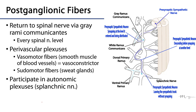Postganglionic fibers, once at a ganglion, can do one of two things: they can leave as a fiber, or they can return back to the spinal nerve and become part of paravascular plexuses. In either option, paravascular plexuses are chock full of two types of sympathetic fibers: vasomotor fibers, which supply the smooth muscle of blood vessel walls and are often thought of as vasoconstrictor fibers; and sudomotor fibers, which serve sudoriferous glands, or sweat glands — one of the few tissues innervated exclusively by the sympathetic system. Postganglionic fibers can also participate in autonomic plexuses.